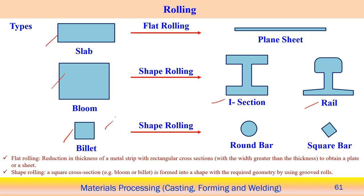When starting from the billet, shape rolling can be used to create round bars or square bars. So depending upon the starting material, we can categorize flat rolling and shape rolling — different kinds of shapes can be produced using rolling operations.